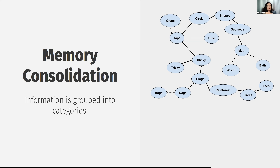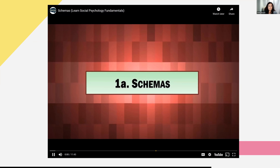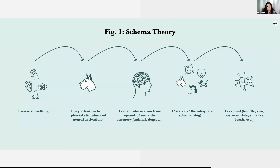Unfortunately, we do this with people and social groups too. Schemas are exactly these categories and groups in our brain. You sense something, you pay attention to it, it maybe stimulates you physically or emotionally, you recall information from your memory, you activate the adequate schema, and then you respond. Even though we're just talking about cognitive constructs, these stereotypes are related to how we plan to act.